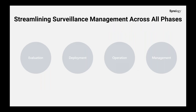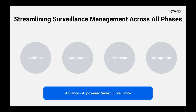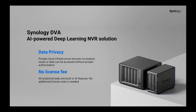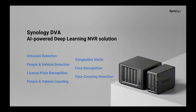We have introduced the major four phases of a surveillance deployment project. However, as technology evolves rapidly, so do the demands of customers. To meet these changing demands, Synology has developed a smart surveillance solution integrated with AI core recognition, known as the Synology AI-powered Deep Learning NVR solution — the DVA series. This solution offers two main advantages: Synology NAS provides a private cloud infrastructure ensuring no analysis result or data can be accessed without proper authorization, and with built-in AI features, there are no additional license costs for analytical tasks. When new features become available, users can simply upgrade the system to access the latest features. Currently, the DVA model supports seven smart analysis features, providing users with advanced analytical capabilities to enhance their surveillance systems.